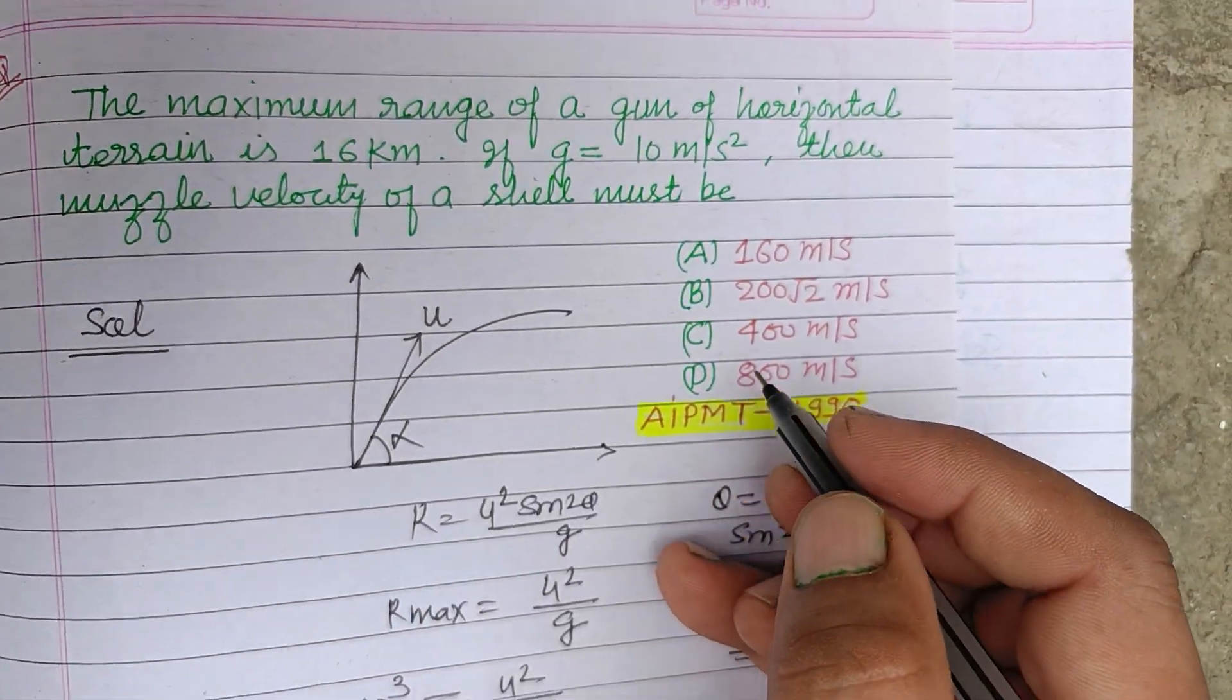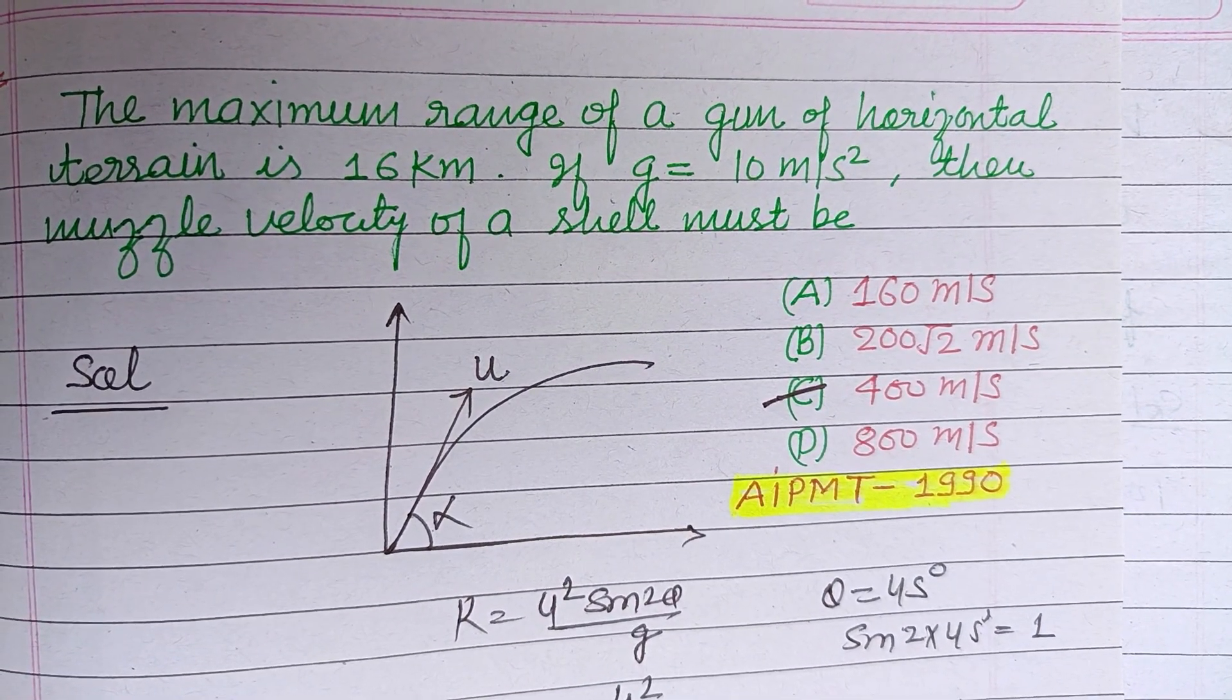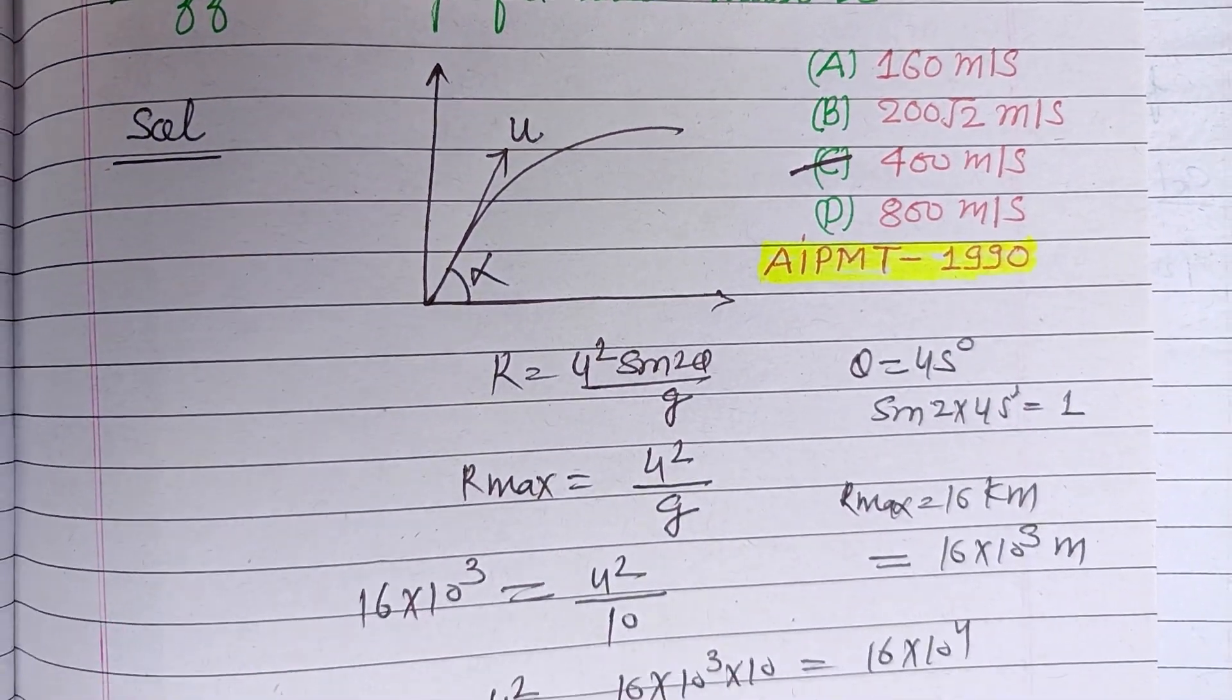So u is 400 meters per second, which is found in option C. Therefore option C is correct. I hope you got it. Please like the video, subscribe to the channel, thanks for watching.